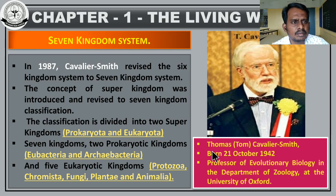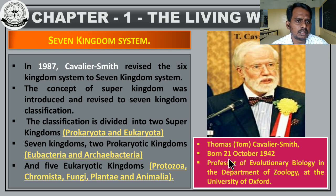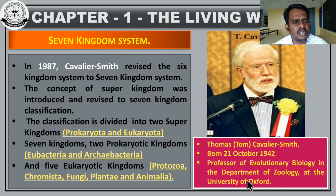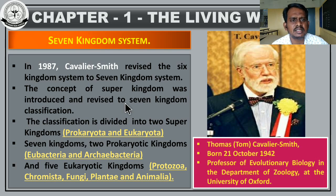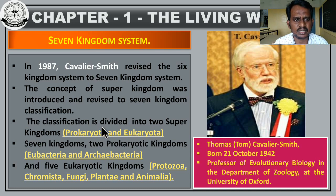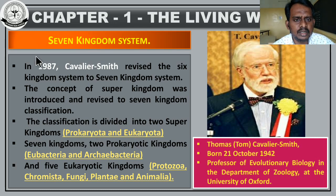Before looking at that classification, we must know some points about Cavalier Smith. He was born on 21 October 1942 and was a professor of evolutionary biology in the Department of Zoology at Oxford University. For the first time, he revised the six kingdom classification into seven kingdoms, classifying all organisms into two super kingdoms: prokaryotic and eukaryotic.